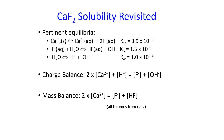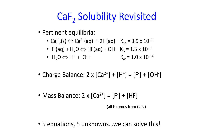Then we write out the equilibrium constant expressions — what Ksp actually equals in terms of calcium and fluoride, what Kb equals in terms of HF, F⁻, and OH⁻, etc. We have three equations from the equilibrium constants, plus a charge balance and a mass balance — five equations and five unknowns: the concentrations of Ca²⁺, F⁻, HF, OH⁻, and H⁺. We can solve this system of equations. That's the systematic treatment of equilibrium in a nutshell.